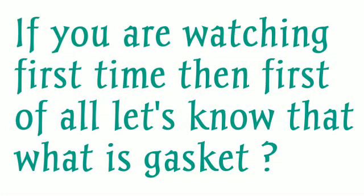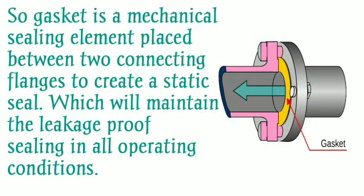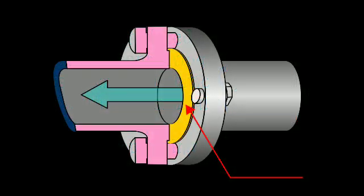Before starting, if you are watching for the first time, we will first know about gaskets. A gasket is a mechanical sealing element which is placed between two connecting flanges to create a static seal, which will maintain leakage-proof sealing in all operating conditions.